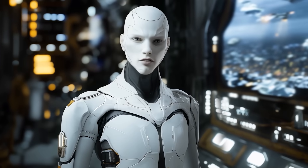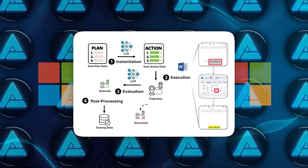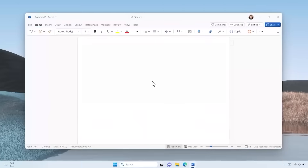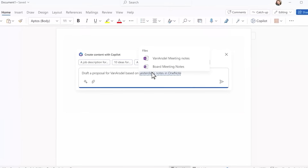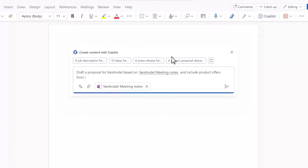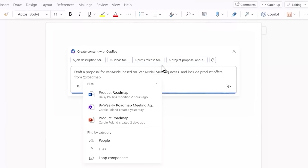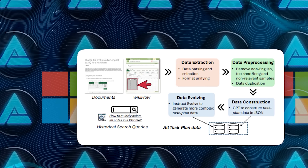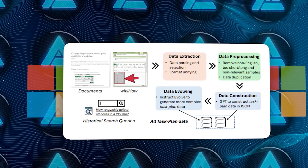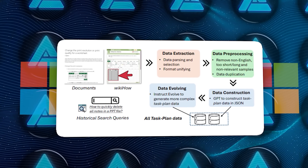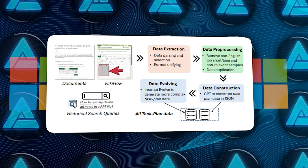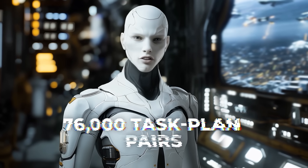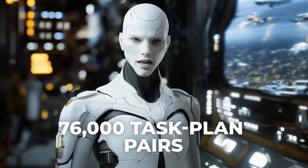The topics ranged from simple items, like changing fonts or highlighting text in Word, to more complicated tasks involving user-defined styles, form-filling, and multi-step formatting. They also used a method called data evolving, where GPT-4 adds complexity to basic tasks by introducing extra conditions or instructions. Eventually, they built up over 76,000 task plan pairs.